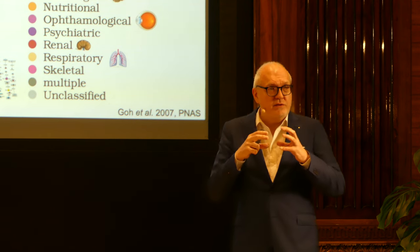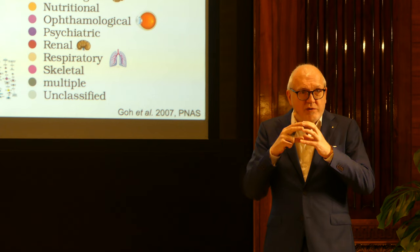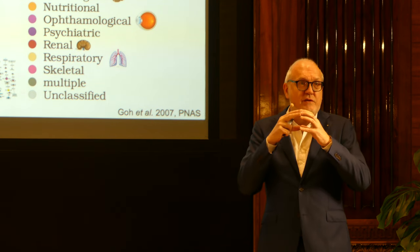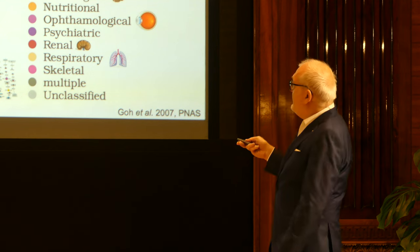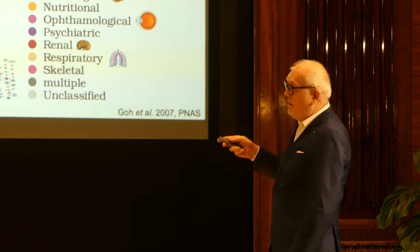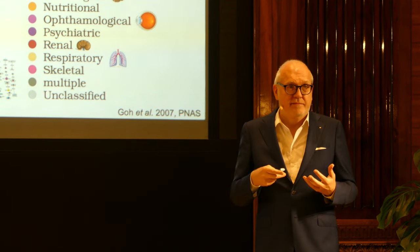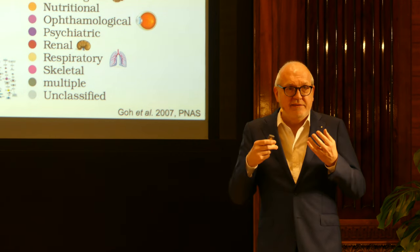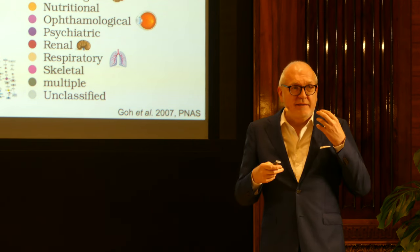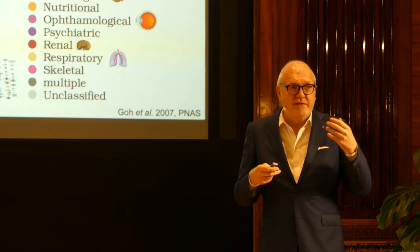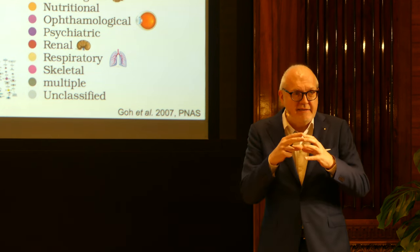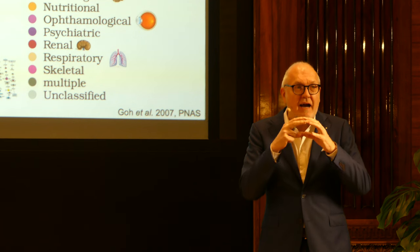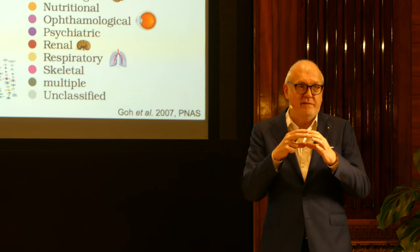They cluster together when they have a lot of shared risk genes, like bridges between the diseases. And you will see that a lot of these clusters are multicolored, which means diseases that we treat by different doctors and different clinics genetically and mechanistically belong together. They are not different diseases.